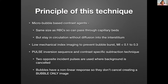The principle of this technique is that these agents are microbubble-based contrast agents. They're the same size as red blood cells, so they can pass through capillary beds, but they stay in the circulation without diffusing into the interstitium. You do need to use a low mechanical index imaging to prevent bubble burst, so the MI needs to be less than 0.1 to 0.3. You use a pulse inversion sequence and a contrast-specific subtraction technique, so your ultrasound machine software needs to be upgraded to have these two sequences.